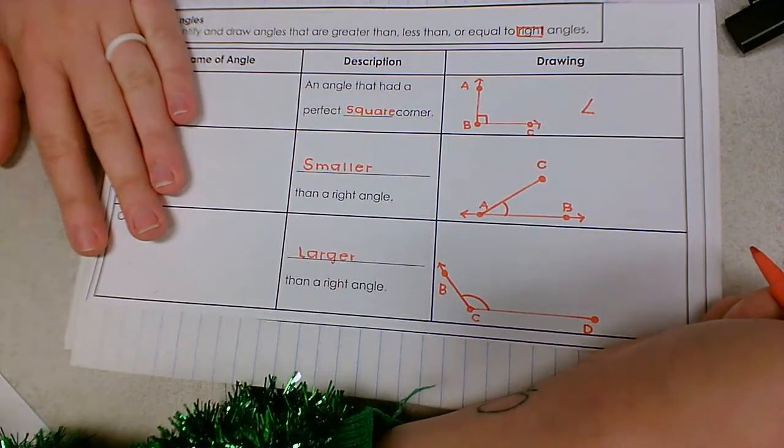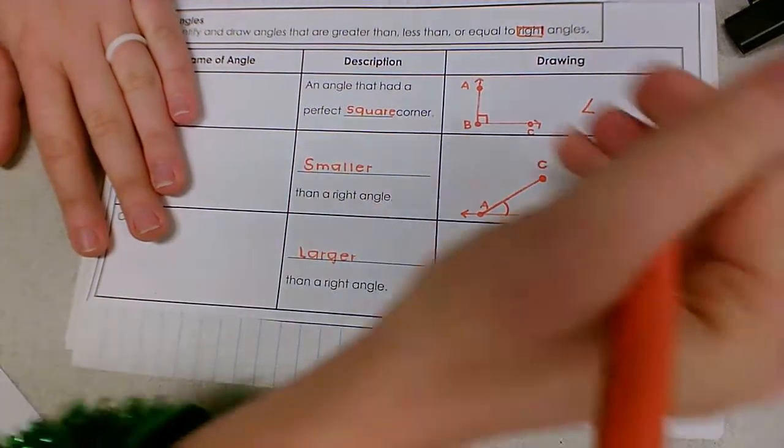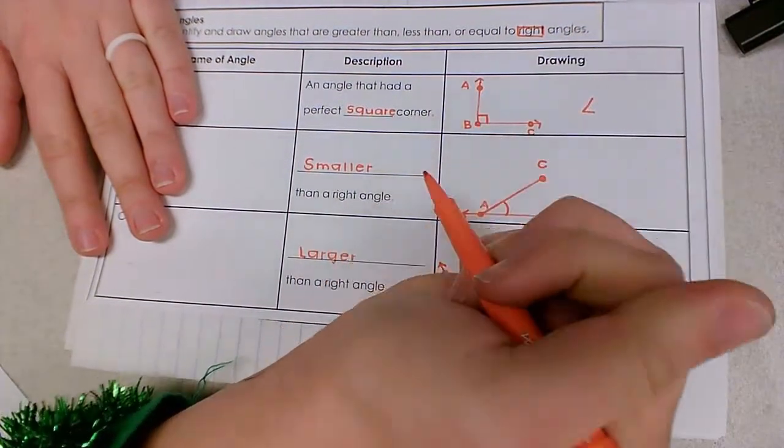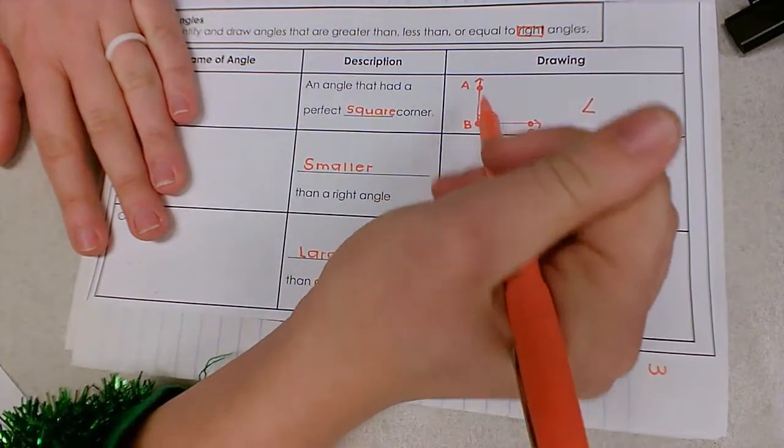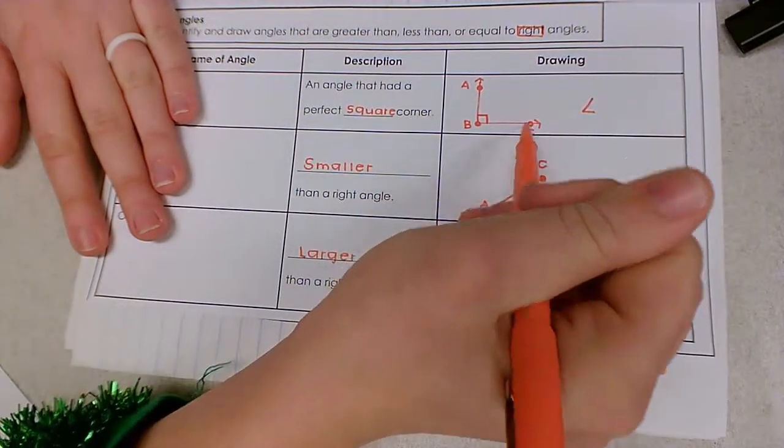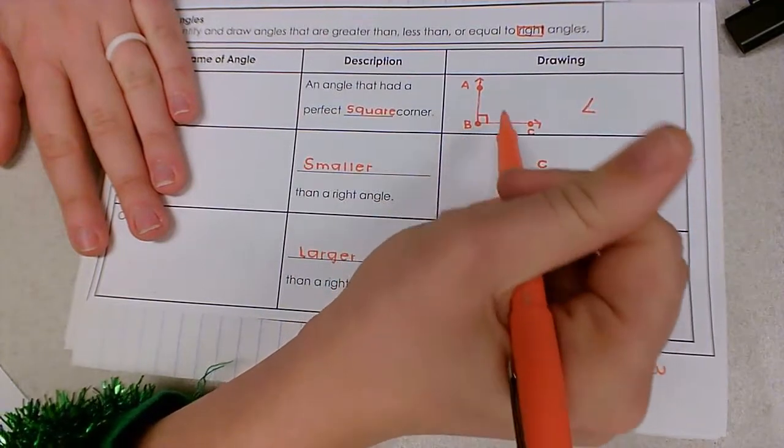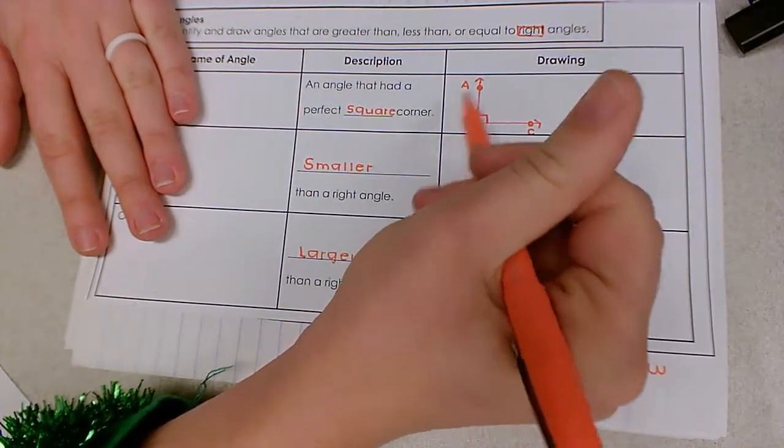Then we mark the three letters in order. We go from one end to the next. We can either go A, B, C, or C, B, A, as long as B is our center point, since it's our shared endpoint.